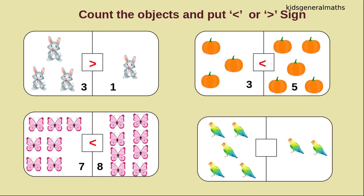Next we are going to count the next object. One, two, three, four, five. How many? Five parrots. One, two. How many parrots? Two parrots. While comparing these two numbers, which number is greater? Yes, five is greater. So the crocodile will open the mouth towards five. So we will say five is greater than two.